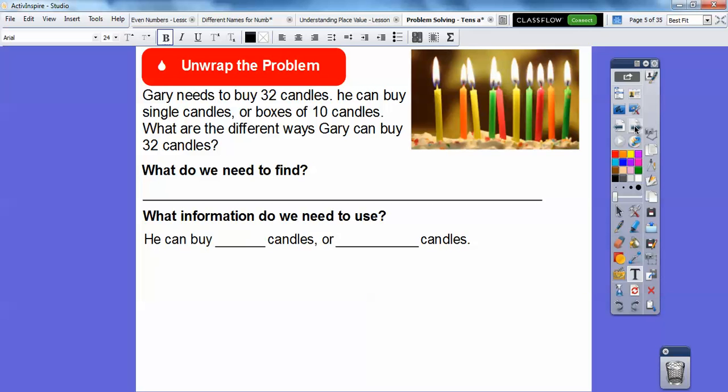So what do we need to find? We need to find the different ways that Gary can buy 32 candles. And what information do we use? Well, he can buy single candles or boxes of 10 candles.